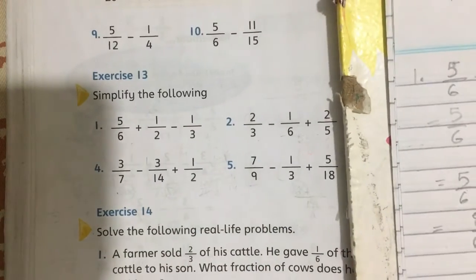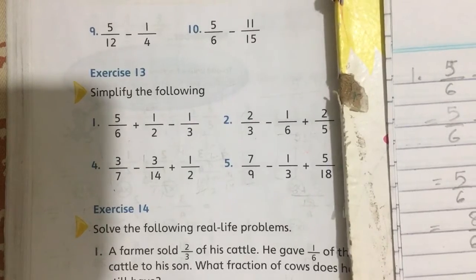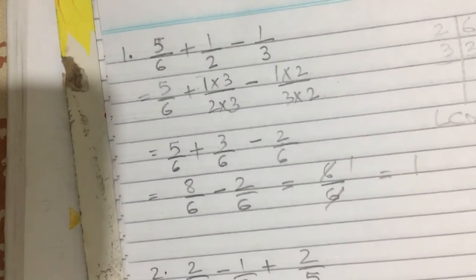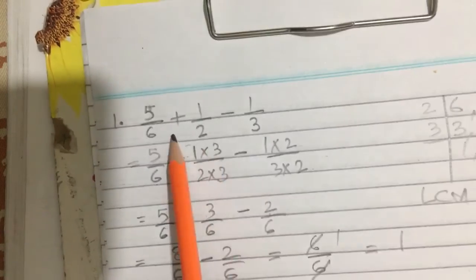This is next: 2 by 3 minus 1 by 6 plus 2 by 5. Here first is subtraction, then addition.